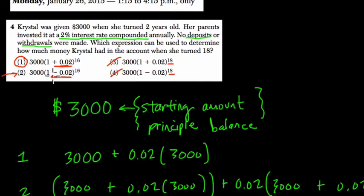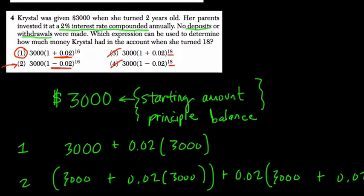If this number, 1 minus 0.02, if the base, that number right there, is less than 1, you have what's called a decay function because you're losing value over time. Here, you're gaining value over time. So it's called a growth function.